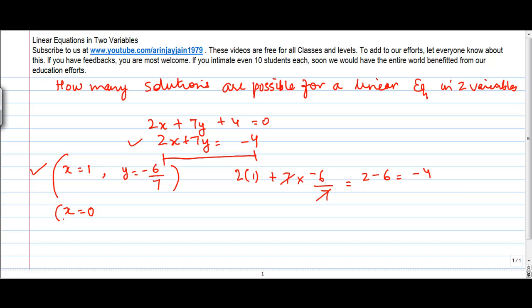Now, suppose x is equal to 0. Then, if I put this value here in this example, this will give me 2 into 0 where 7y is equal to minus 4, or y is equal to minus 4 by 7.